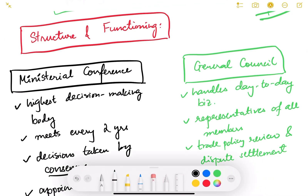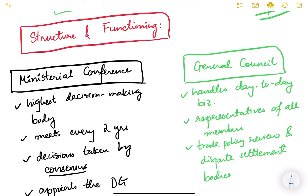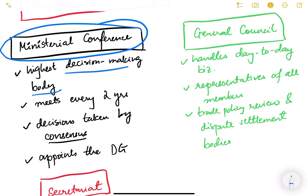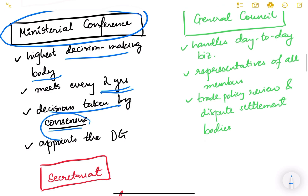Now let us look at the structure and functioning of WTO — how its leadership is distributed. At the top is the Ministerial Conference, which is the highest decision-making body — like a parliament of WTO — with membership from all countries. It meets every two years and takes decisions. Any decision on rounds of negotiations or agreements has to be taken by the Ministerial Conference.